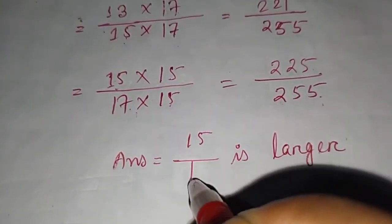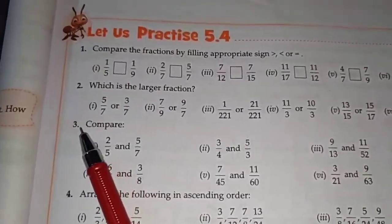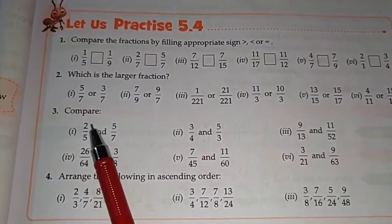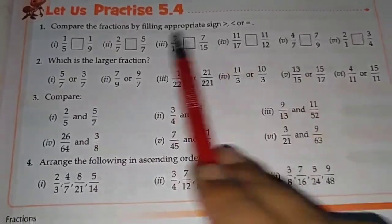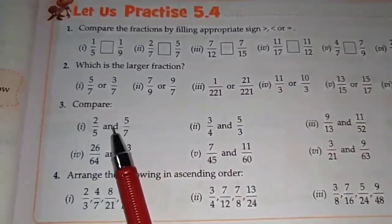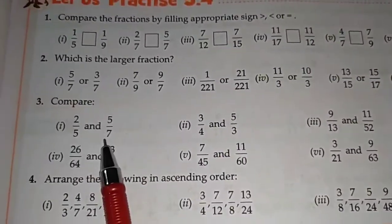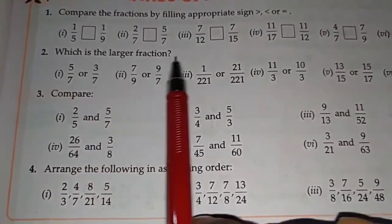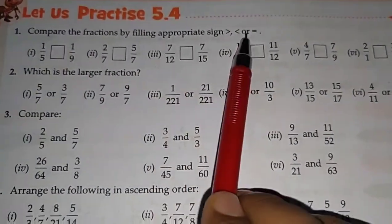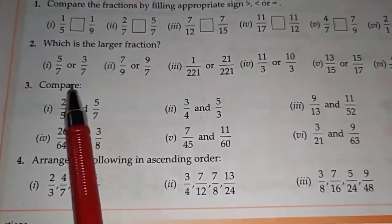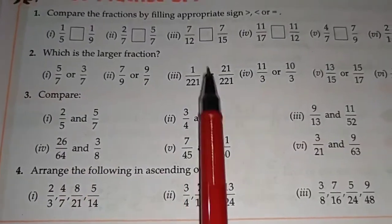Question 3: compare 2/5 and 5/7. All sums follow the same process — identify which fraction is bigger and which is smaller. Solve using the same LCM method as shown.